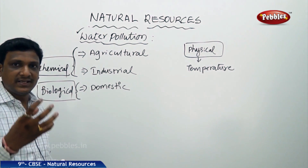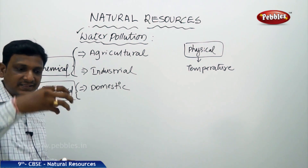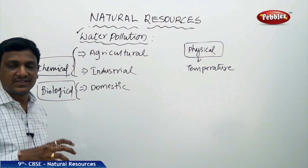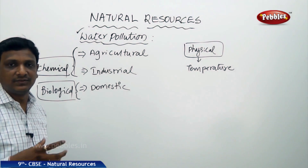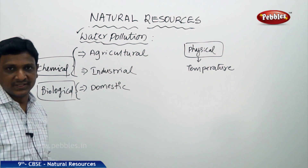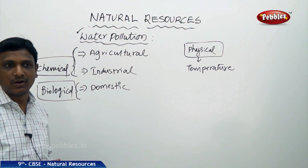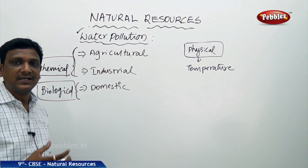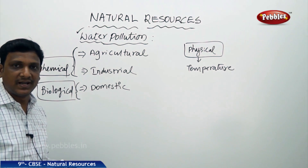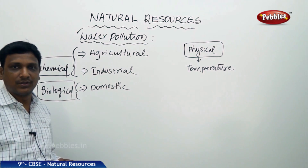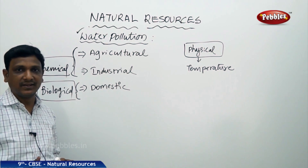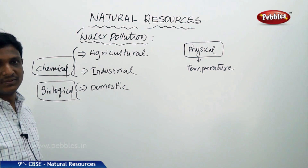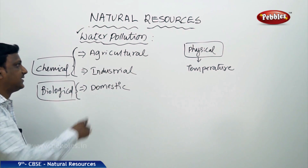In many areas, the insecticides, pesticides, and fertilizers sprinkled in the fields seep down into the groundwater table, polluting the groundwater. This was the reason, found some 5 to 6 years back, that people found pesticides in soft drinks — because those soft drink factories were established on former agricultural lands where pesticides had been heavily applied. Those chemicals seeped into the groundwater, which was then used to make the soft drinks, so the pesticides reached the soft drinks. This is how chemical pollution of groundwater and other water bodies takes place through agriculture.